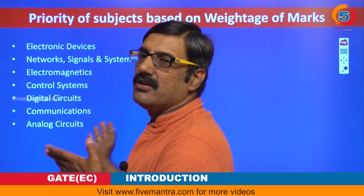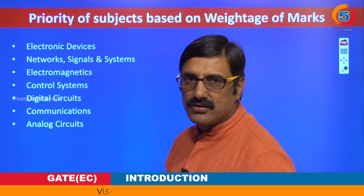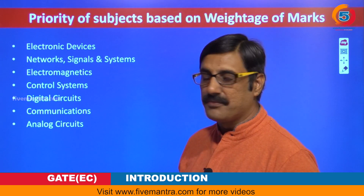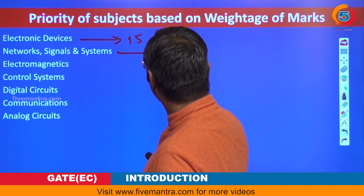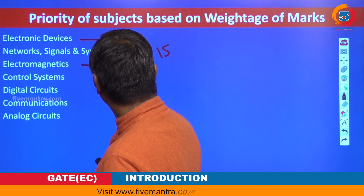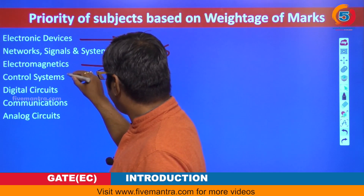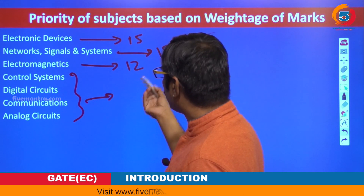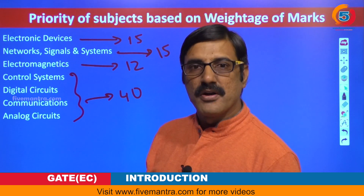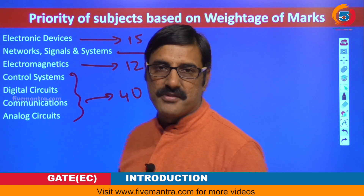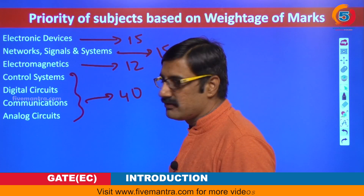Always focus on your areas of interest. For example, the first three priority subjects — mathematics (around 15 marks), networks (around 15 marks), and electromagnetics (around 12 marks) — together give around 40 to 42 marks. If you are good at these three subjects, you can easily score 40 marks. The remaining four subjects put together are also only around 40 marks. So instead of studying four subjects, focusing on these three primary and foundational subjects can get you a good score.